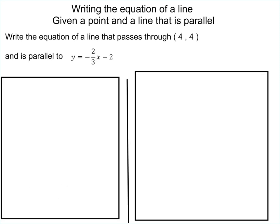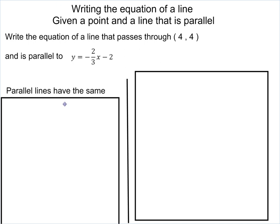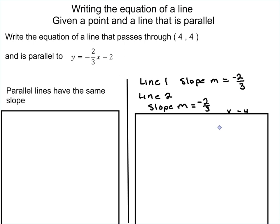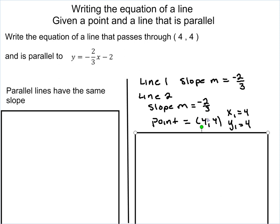Next, we're going to look at writing an equation of a line if you're given a point and a line that is parallel to that one. So here, we're going to write an equation of a line that passes through (4, 4) and is parallel to y equals negative 2/3x minus 2. Now, we want to remember from slope that parallel lines have the exact same slope. So in this case, if line 1, my slope is m equals negative 2/3, my slope of the next problem is m equals negative 2/3, and my point is (4, 4).